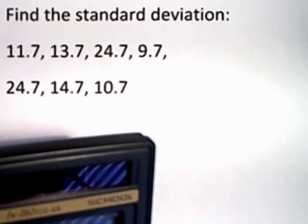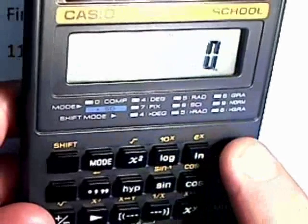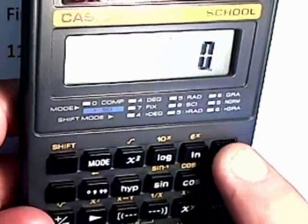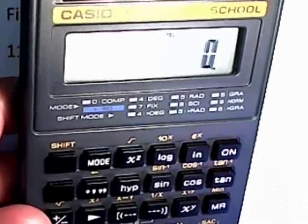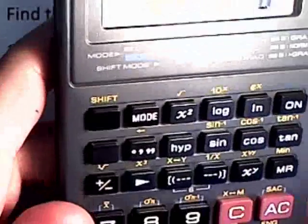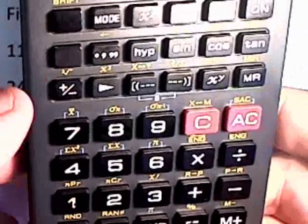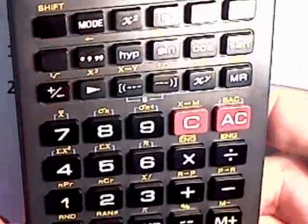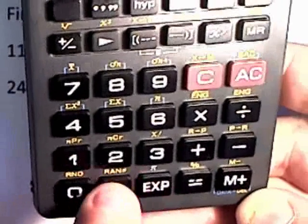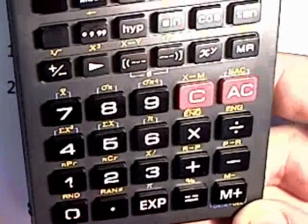The first thing you have to do is get the data into the data set in the calculator. To be sure that there's no leftover data hanging around, just press the on button and you'll clear everything out. Then you need to go into the stats mode. The stats mode is accessed by pressing the shift key followed by the decimal. That puts you into stats mode.